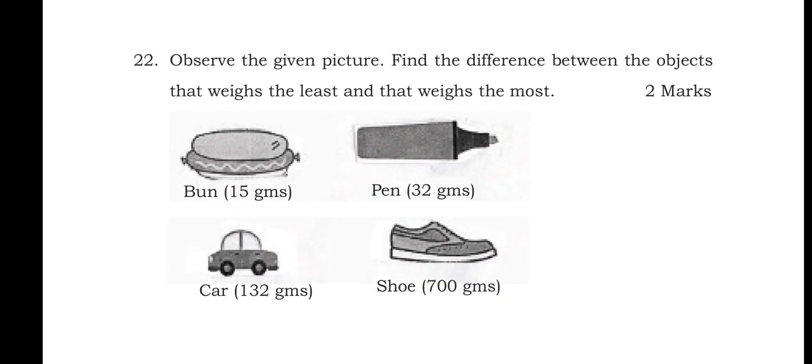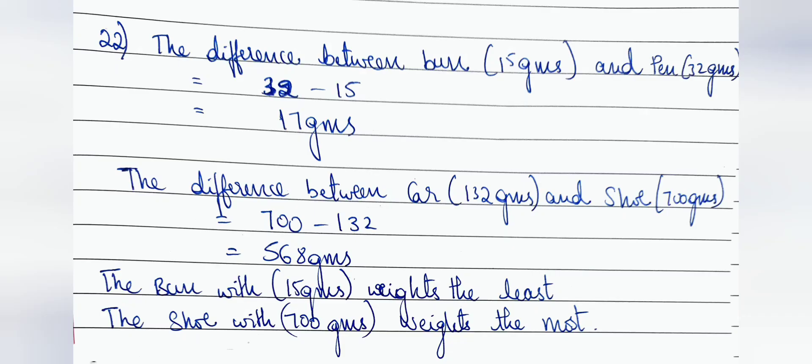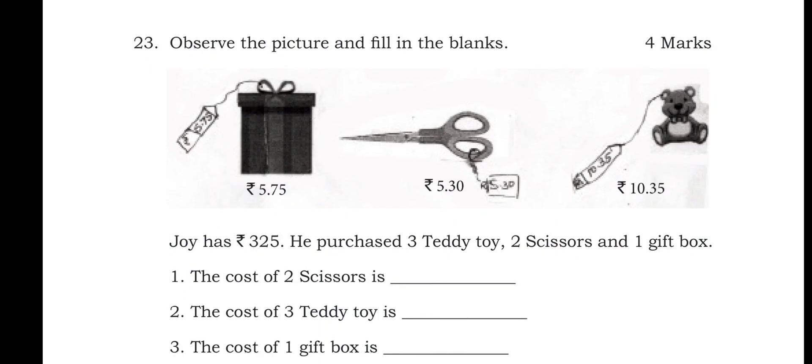Observe the given picture — find the difference between the objects that weigh the least and the most. The bun weighs 15 g (least) and the shoe weighs 700 g (most). Difference = 700 − 15... also noted: pen 32 g minus bun 15 g = 17 g; car 132 g; shoe 700 g minus car 132 g = 568 g.